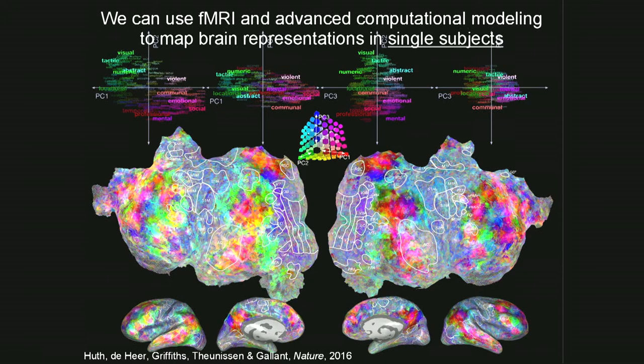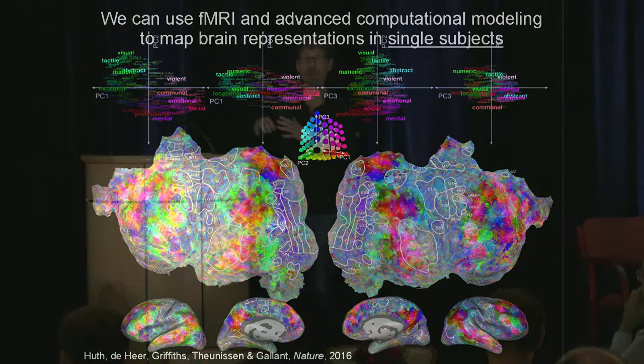The bright green spots indicate parts of the brain that become active when you hear a story about visual information — for example, a description of a sculpture or the paint in a building or wallpaper. The dark green domains become active when you hear about numbers, and those domains also become active when you hear about time, dates, or quantities of measure like ounces or money. In this particular experiment we are mapping about 2,000 semantic domains, but we can usually map up to 10,000 or so in one experiment.